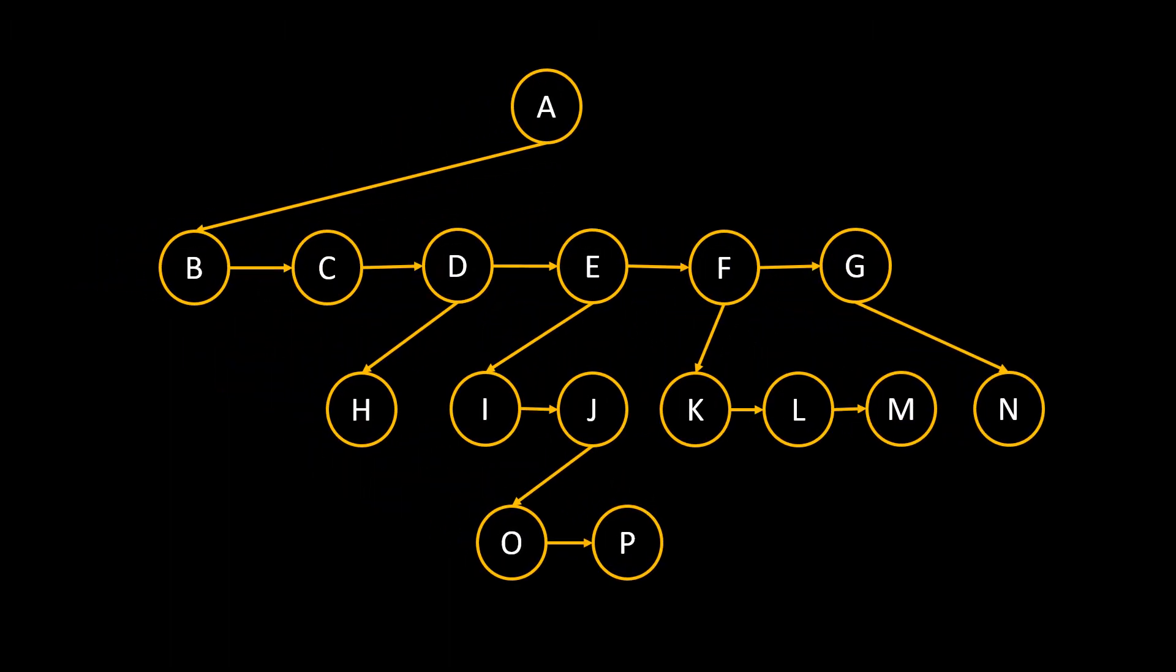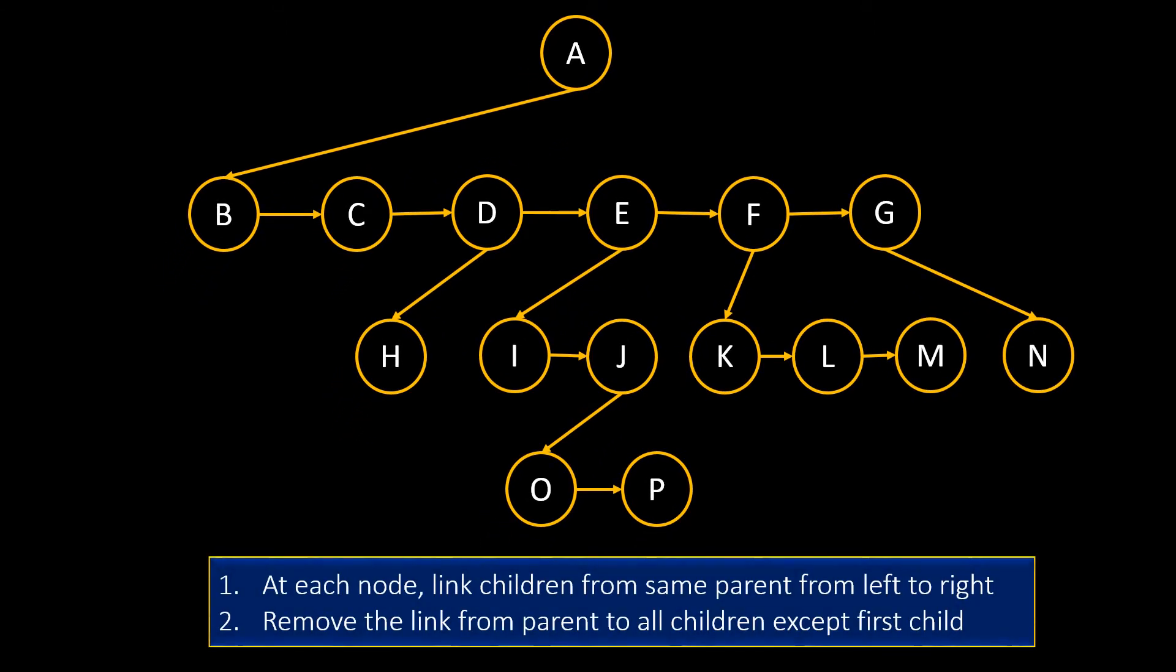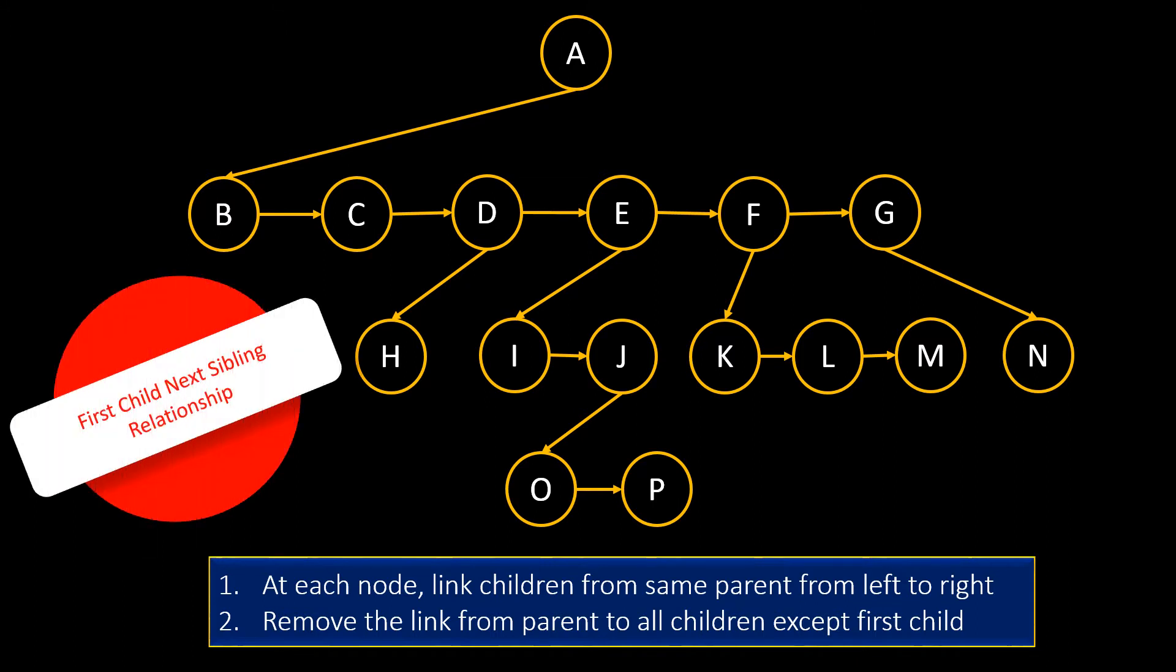So, this is one of the representations of the same tree. Here, at each node, we link children from the same parent from left to right. And, we remove the link from parent to all children except the first child. So, the n-ary tree is now converted to a binary tree format. And this relationship is called first child next sibling relationship, where a node is linked with its first child and this child is linked with all its siblings.